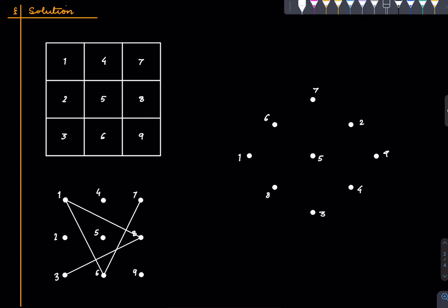If the knight were at 3, it could go to 4 or 8. If the knight was at 7, it could go to 2 or 6. If the knight were at 4, it could go to 9 or 3. And if the knight were at 9, it could go to 2 or 4.